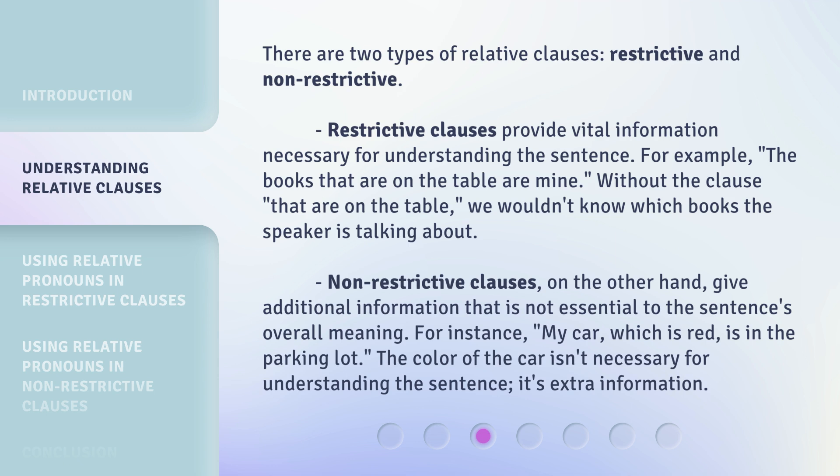Non-restrictive clauses, on the other hand, give additional information that is not essential to the sentence's overall meaning. For instance, 'my car, which is red, is in the parking lot.' The color of the car isn't necessary for understanding the sentence — it's extra information.